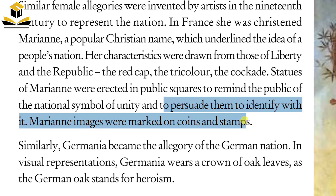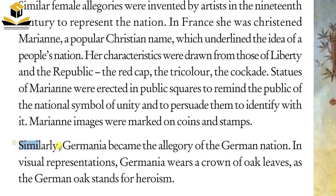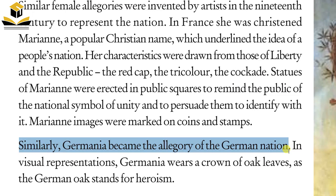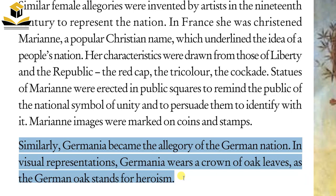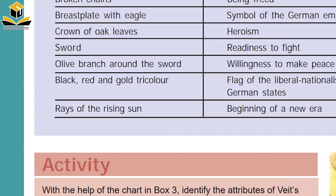Germania became the allegory of the German nation. In visual representations, Germania wears a crown of oak leaves, as the German oak stands for heroism. The crown of oak leaves, forming a kind of crown or taj, symbolizes heroism.